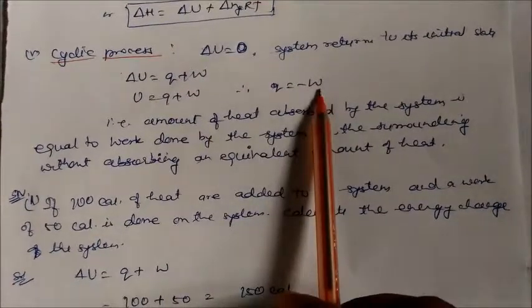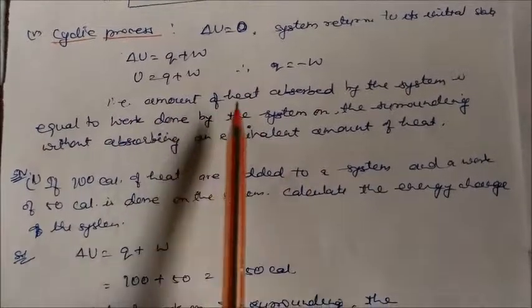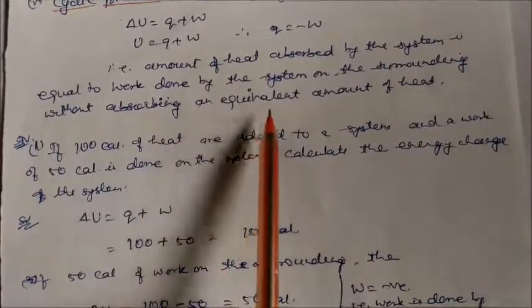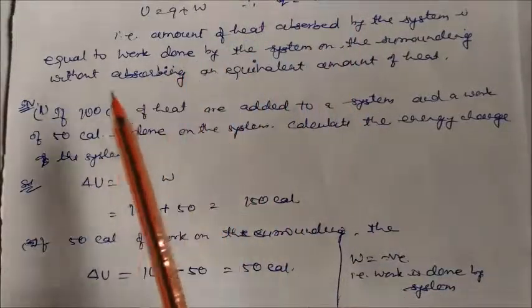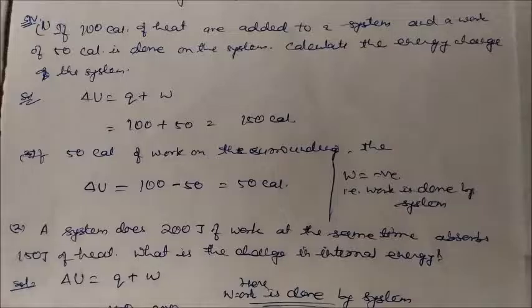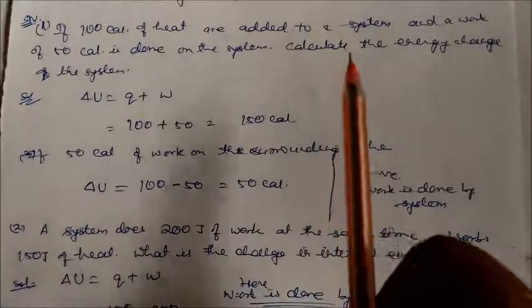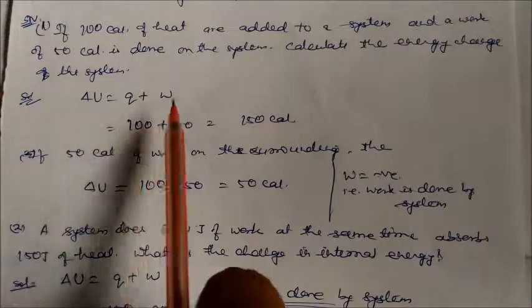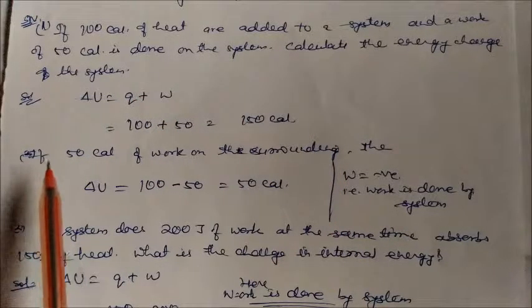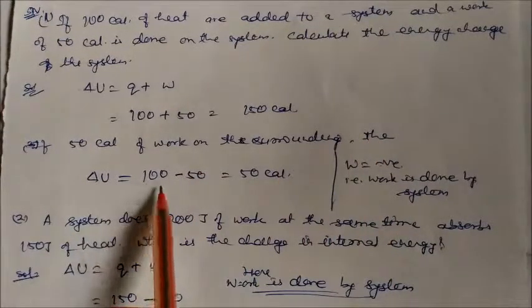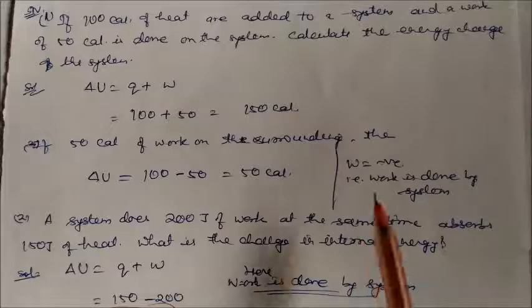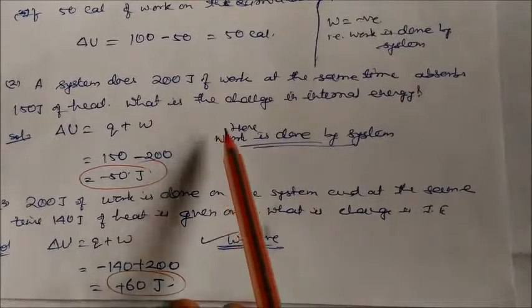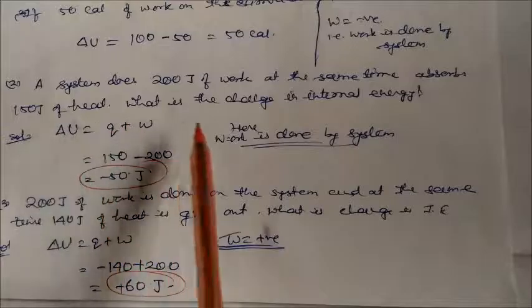The new quantity H is called enthalpy or heat content of the system at constant pressure. The empirical relation is H = U + pV, and ΔH is the enthalpy change. Enthalpy is defined as the sum of internal energy and the product of pressure and volume. We will study this further in the next lectures.